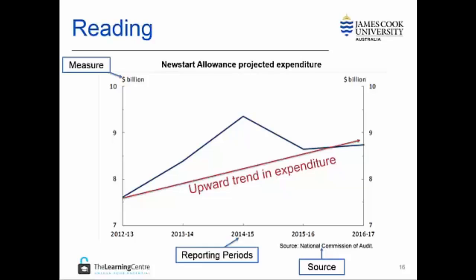If we draw a line from the start of the graph to the end point of the graph, we can see the change over time or the trend was upward, which represents an increase in expenditure.